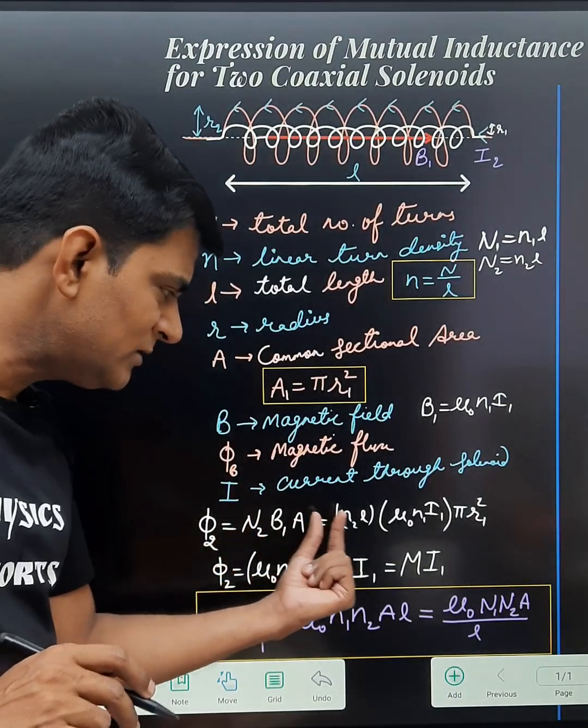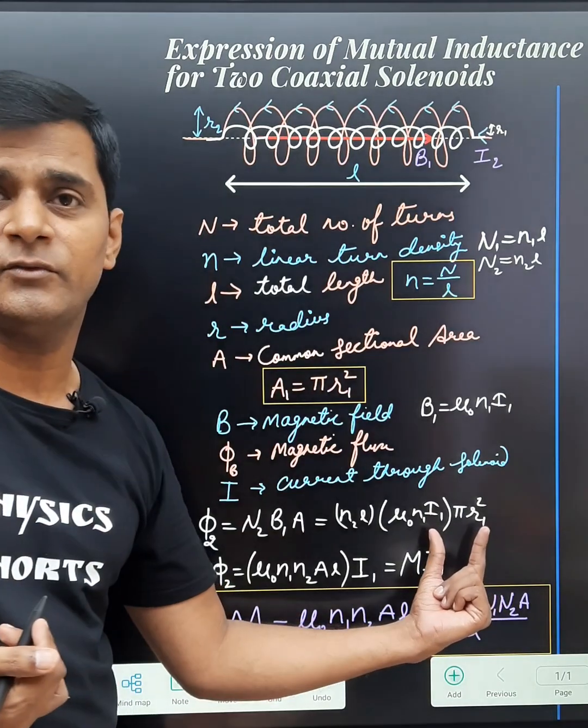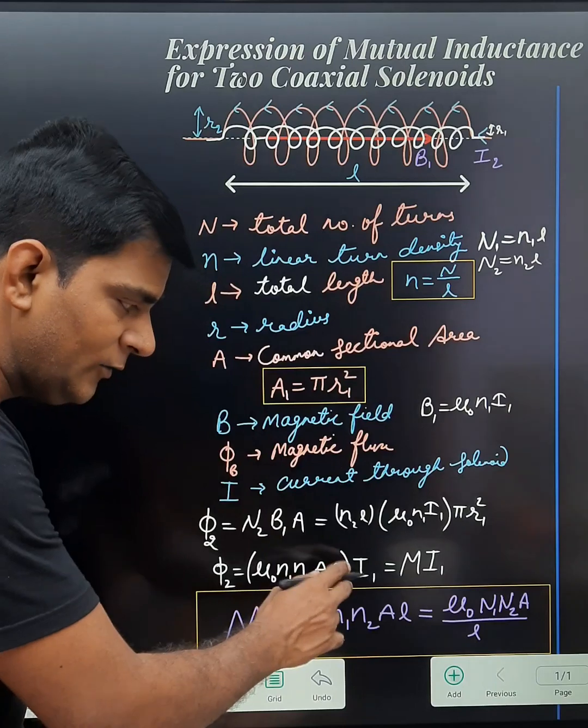So when we write their values, N2 is N2 into L, B1 is μ0 N1 I1, and this area is π R1 square. So when we solve this, we can find φ2 equals to μ0 N1 N2 AL into I1.